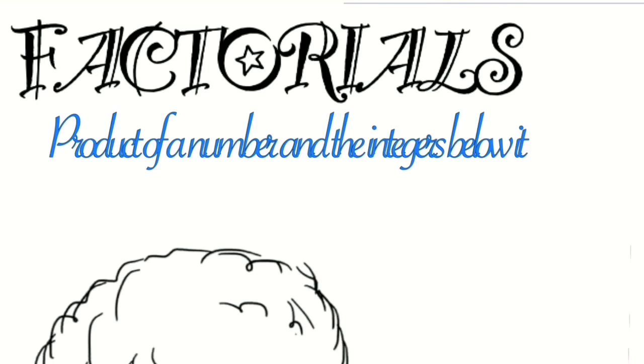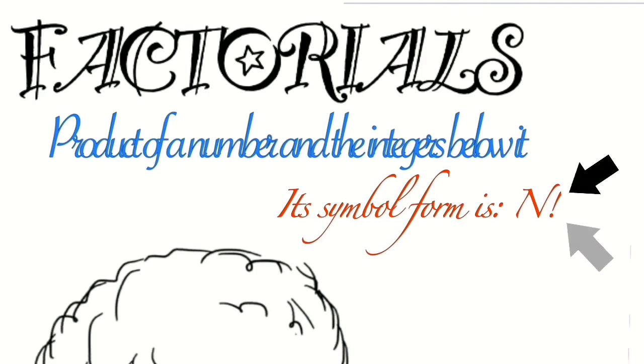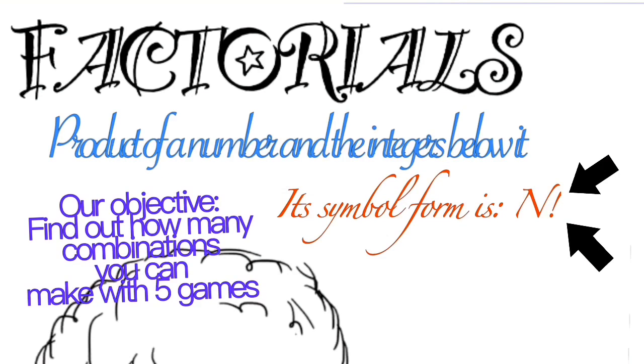A factorial is the product of an integer and the integers below it and is represented by this symbol. All we have to do is figure out how many ways to arrange 5 games, which is by solving the factorial of 5.